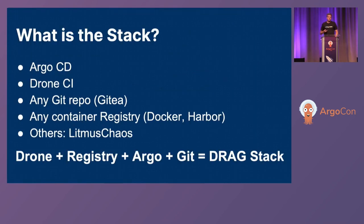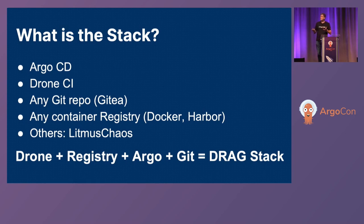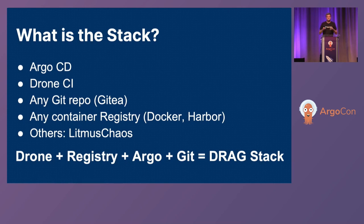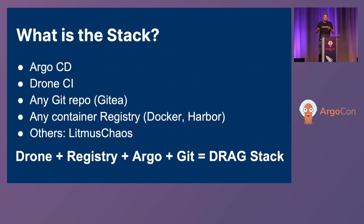We put together something called the DragStack. It's Argo CD, Drone CI, and we use Gitea — but the intention is for you to be able to use this with any Git repo, and also any container registry. Right now we're using Docker Registry, but we're talking about using Harbor instead or in addition. And you might want to play around with other things, so why not add something like Litmus Chaos for chaos engineering? The D is for Drone, the R is for any registry, the A is for Argo, and the G is for any Git.